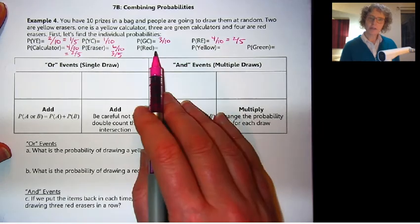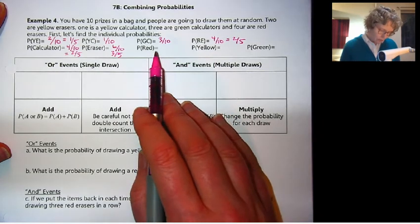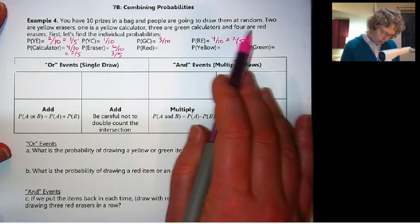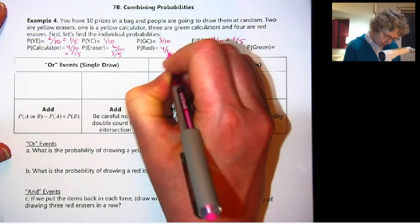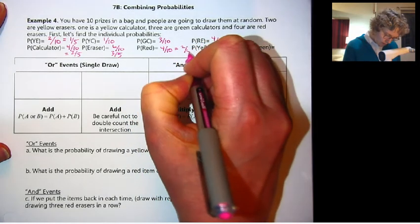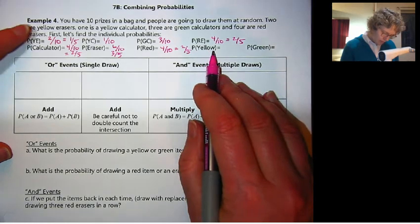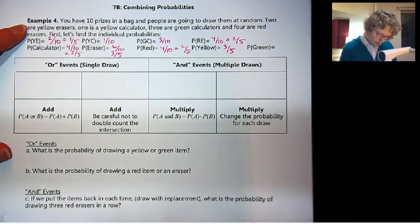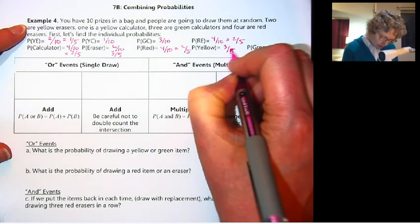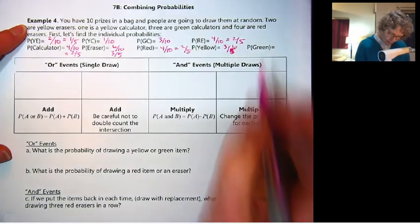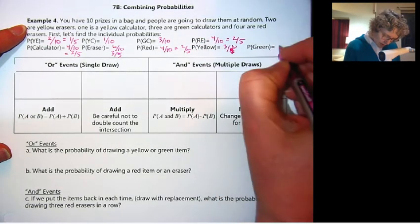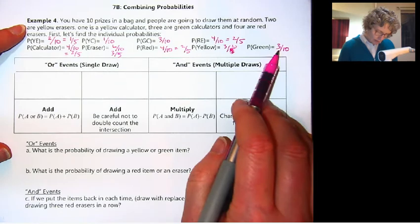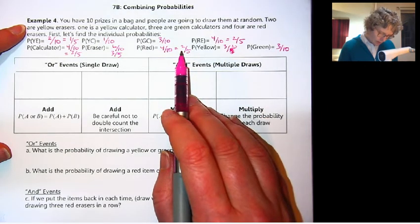Similarly, there's 3 different colors of items. So they should add up to 1. Red items are 4 out of 10, or 2 fifths. The yellow, yellow erasers 2 of those, and a yellow calculator, so that's 3 out of 10. And then green, there are 3 green calculators. Does that add up to 10 out of 10? No, it does not. What did I forget?